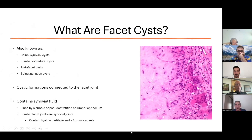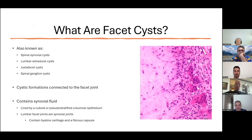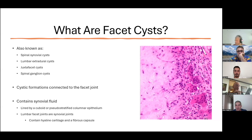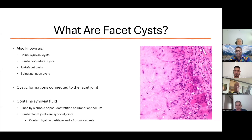There are several different names for these structures, but we typically just call them facet cysts or spinal synovial cysts. They are cystic formations that have some form of connection to the actual facet joint themselves. Just like the facet joints, they are lined with synovium and contain synovial fluid, which creates that mass effect.